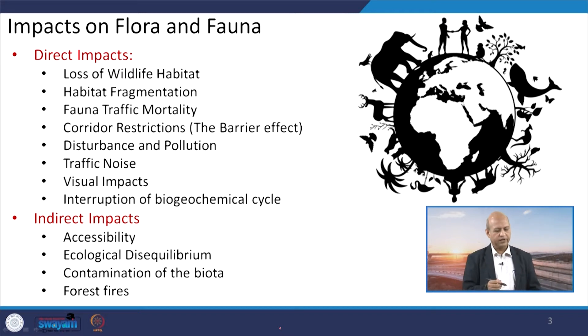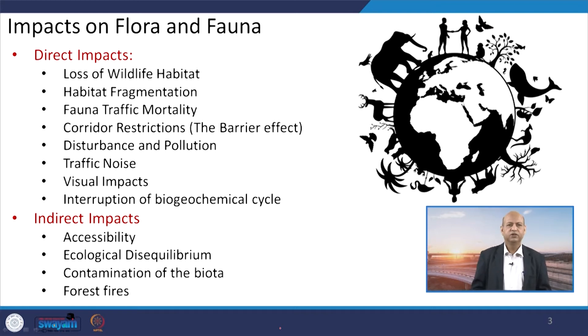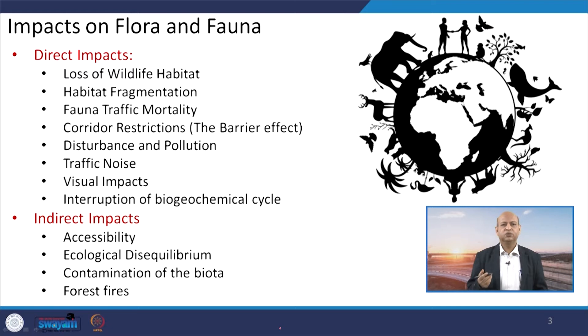You can see the list of direct impacts. Direct impacts can be like loss of wildlife habitat directly, or fragmentation of habitation of wildlife. There is mortality of fauna — fauna means animals, flora means plant life. Traffic accidents may occur and deaths of animals may happen. Corridor restrictions or barrier effects mean if there are railway or road corridors, they will act like a barrier influencing movements of animals and the ecosystem.